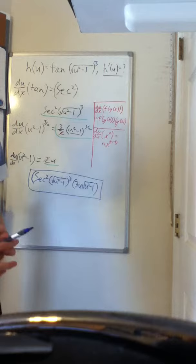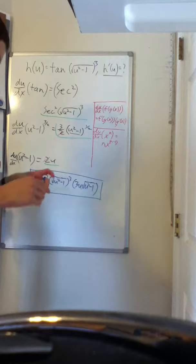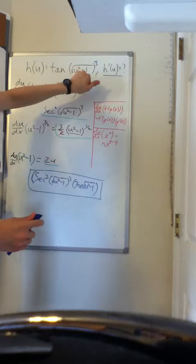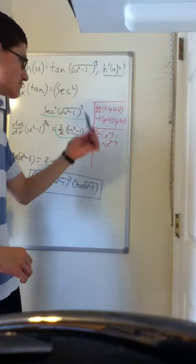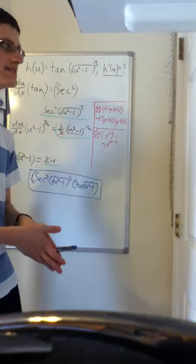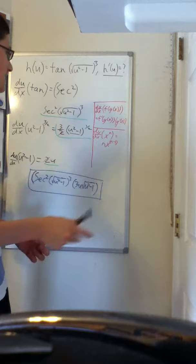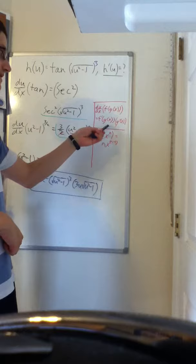The chain rule specifies that if you have a function of a function like f of g of x, in this case we have tangent of the inside, first we take the derivative of the outside function and leave the inside function as is. Then take the inside function, bring it out and take the derivative of that. So for f of g of x, the derivative would be f prime of g of x times g prime of x.